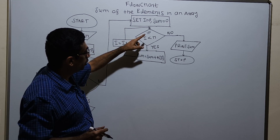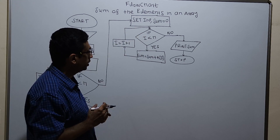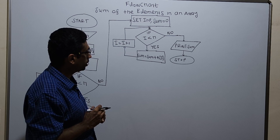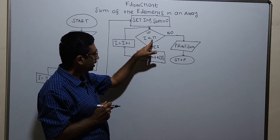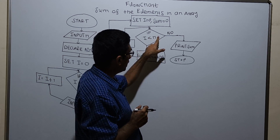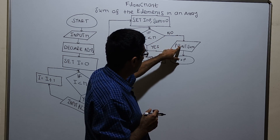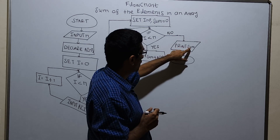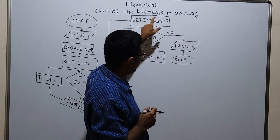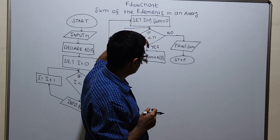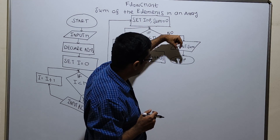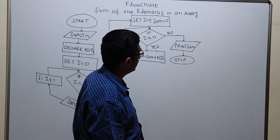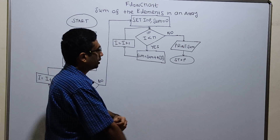Likewise, the values from a of 0 to a of n minus 1 will get accumulated in the variable sum. If i less than n is false, I am printing the value of the sum. That means the array values are added, stored in the variable sum, and printed. And this is the logical end of the flowchart.